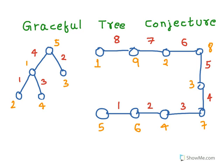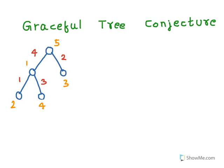Now the question is, can we do this for every tree? The conjecture says that every tree has a graceful labeling. So if a tree has a graceful labeling, then we call the tree graceful.